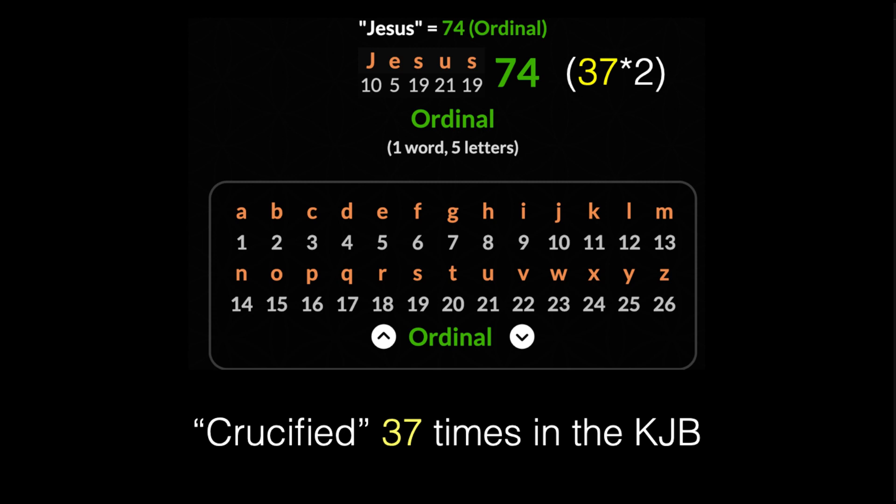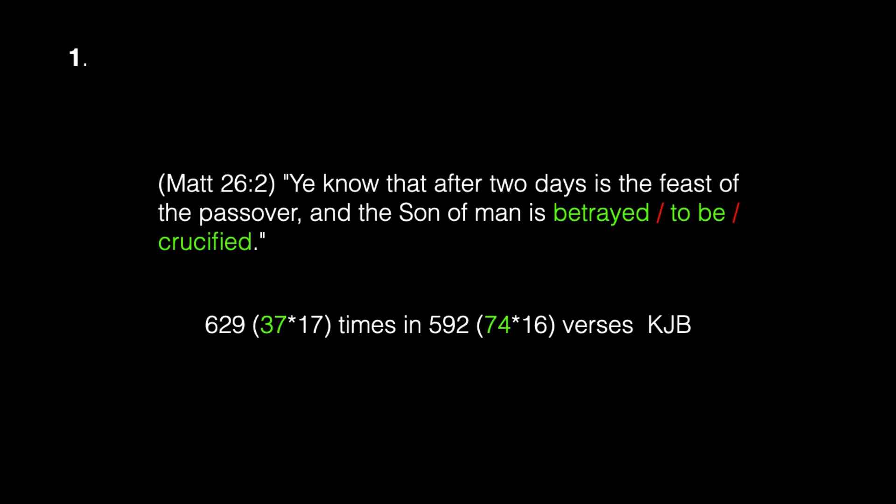Even multiples of 37 will be stated in terms of 74, since the name Jesus has a value of 74 using a simple English cipher where A equals 1 and Z equals 26. I will also show you where 74 occurs in any Bible, not just the English King James. Let's go to the first occurrence of crucified in Matthew 26:2: 'Ye know that after two days is the feast of the Passover and the Son of Man is betrayed to be crucified.' The combination of 'betrayed,' 'to be,' and 'crucified' appears 629 times in the KJB — 37 times 17 — and in 592 verses, which is 74 times 16. Words and phrases will be separated by red forward slashes; case-sensitive items will be underlined.